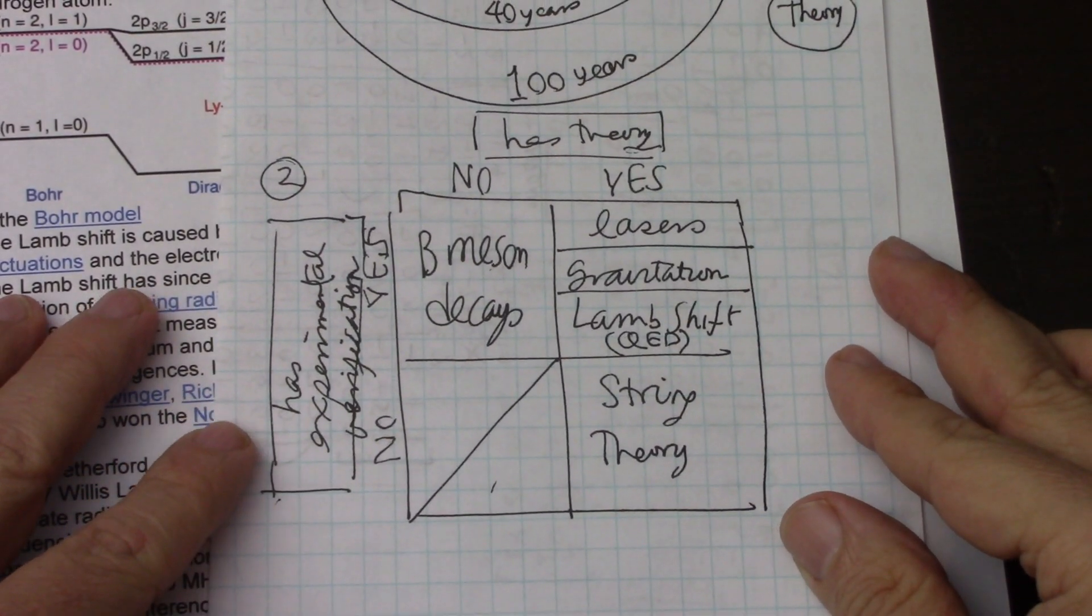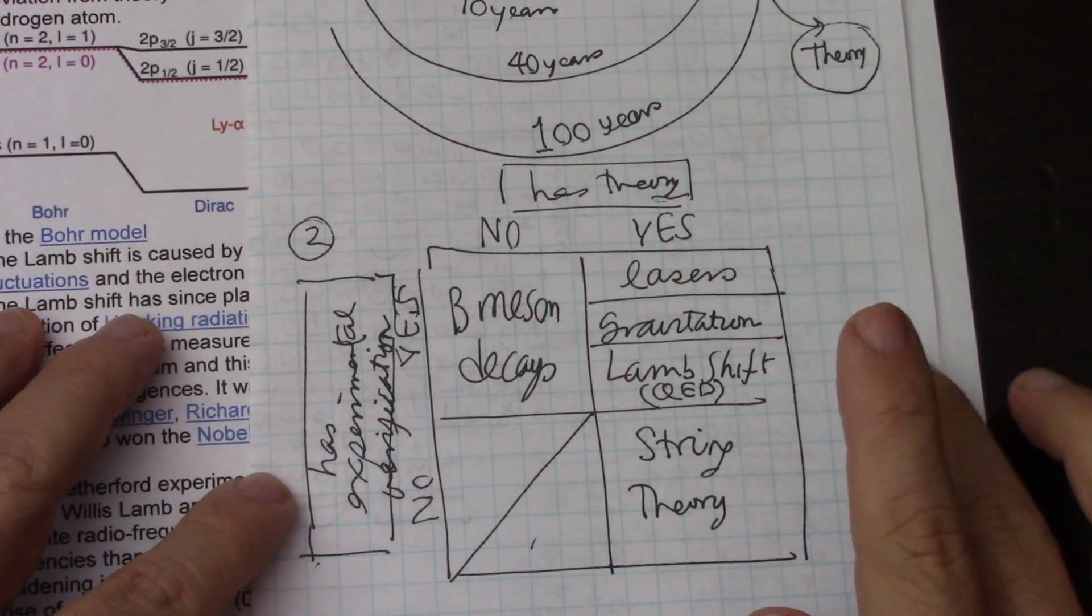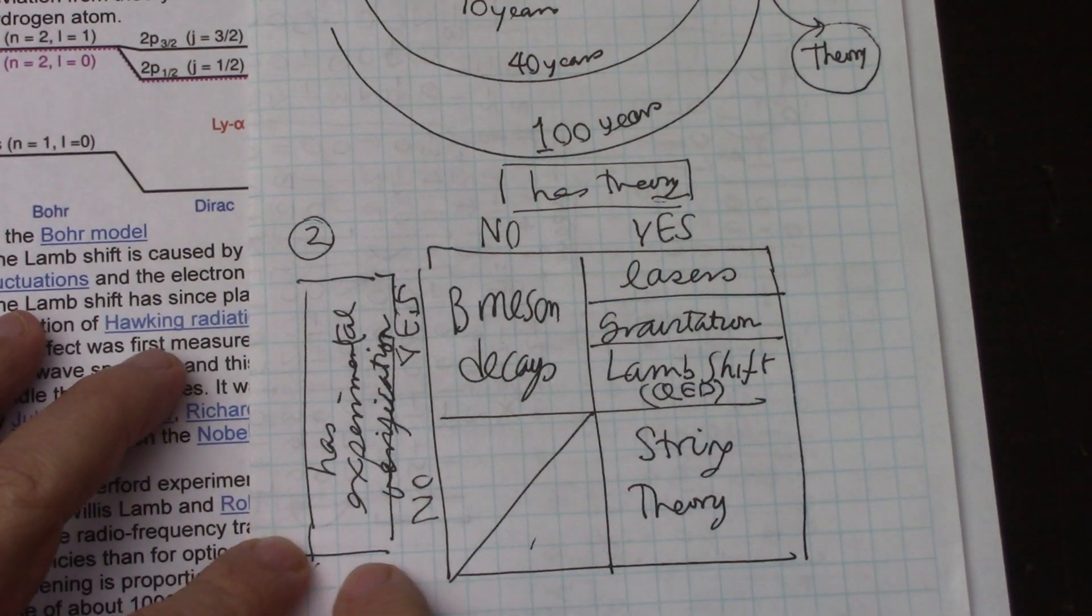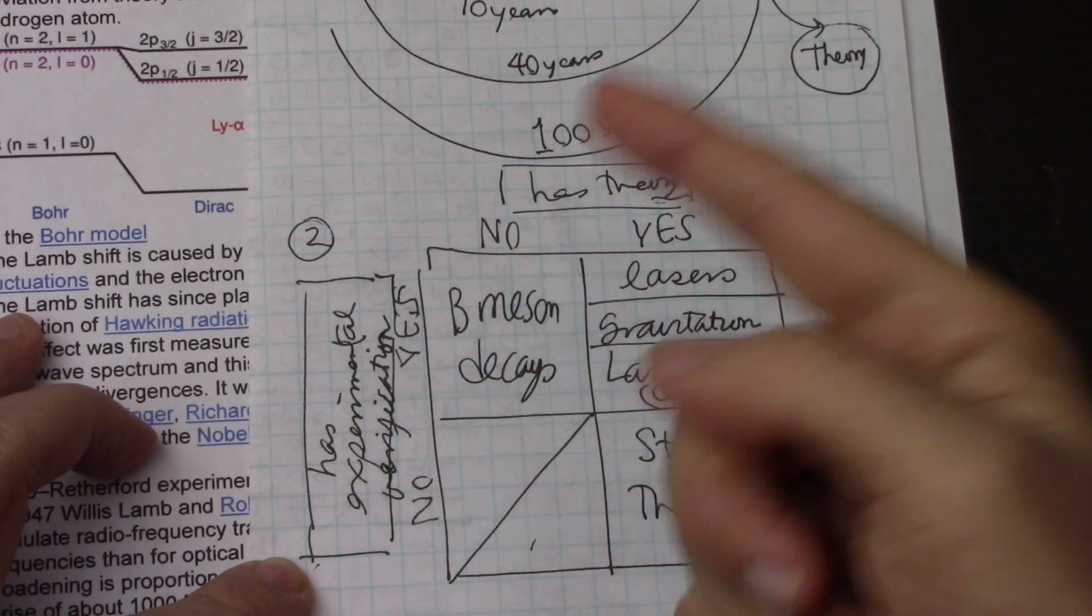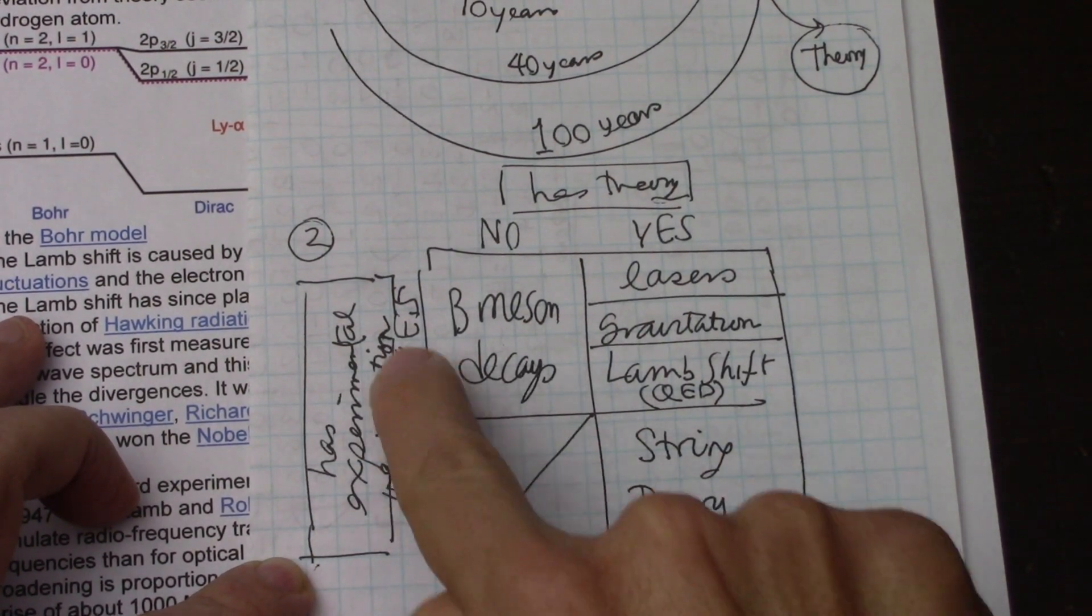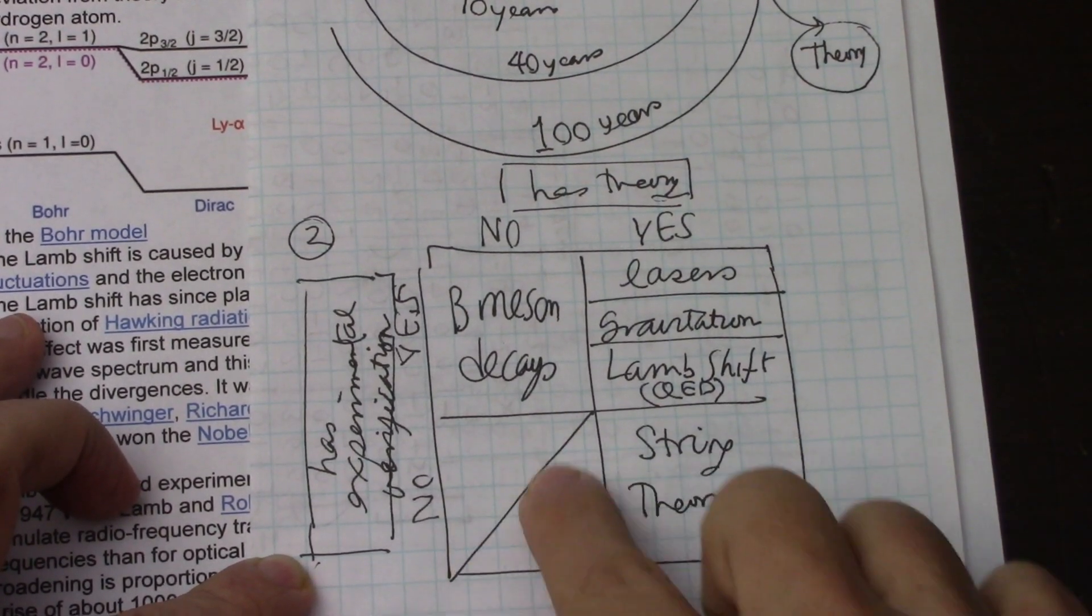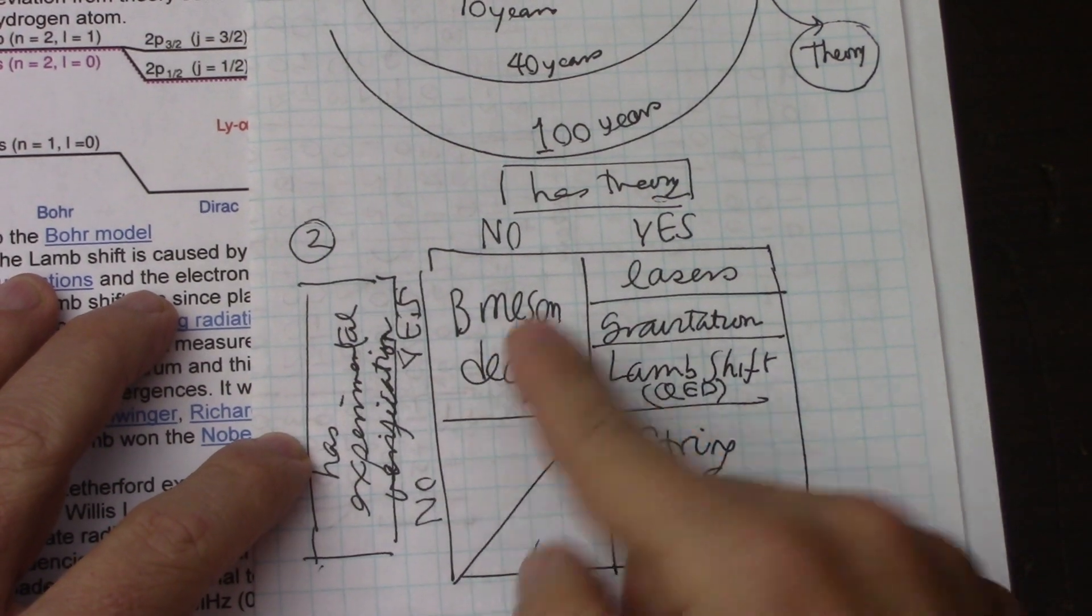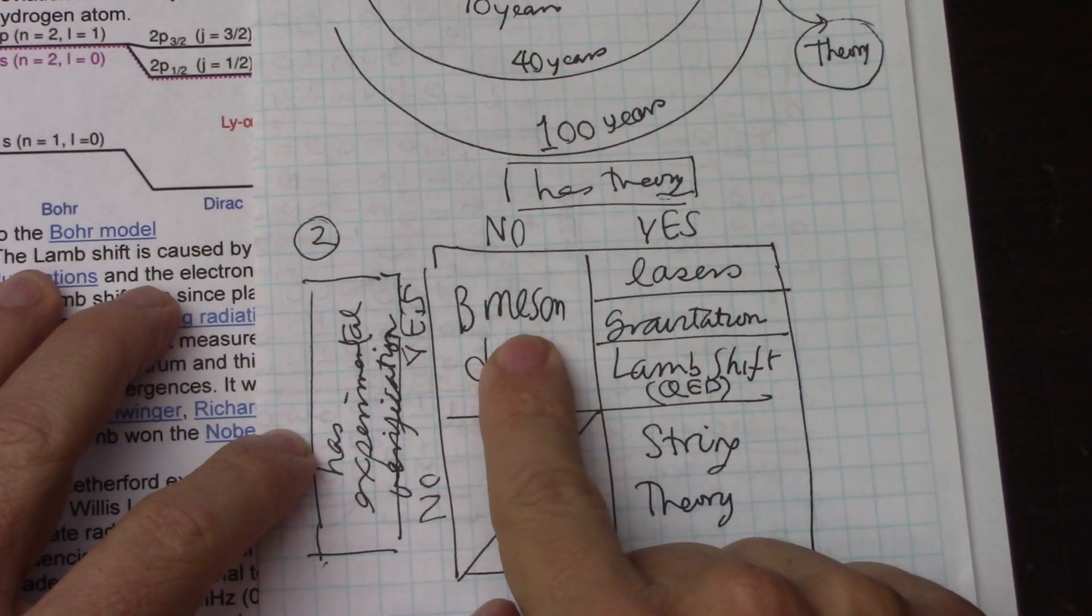Then when it comes to, I like these little truth tables. So on this axis I have, has experimental verification, no or yes, has a theory, no or yes. Of course, if it's both no's, it means nothing. But in the case of B meson decays, if you saw my other videos about my very brief particle physics stint, B meson decays have experimental verification.